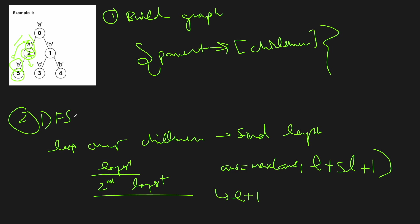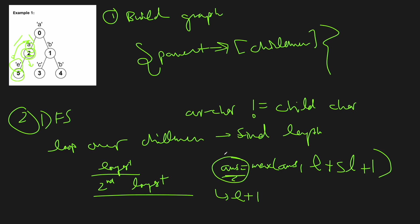We do need to be careful: whenever we take a path, we have to make sure the child's character doesn't equal the current node's character, because we're not allowed adjacent nodes with the same character. So for all our children, we check that the current char doesn't equal the child's char. If it does equal, we can't take that path. That's really all we have to do — run the DFS, build all possible paths, compare against the maximum answer so far, and when DFS finishes we'll have our answer.